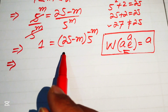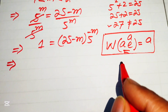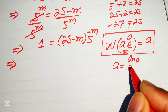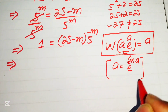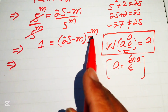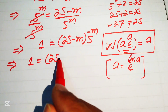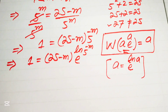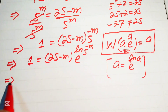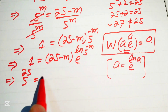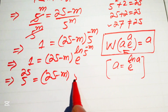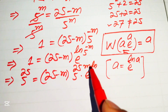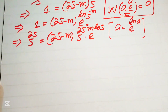We rewrite 5 to the power of minus m using the identity a = e^(log a), so 5^(−m) becomes e^(log 5 · (−m)). This gives us 1 equals (25 minus m) times e to the power of (−m · log 5). Then we multiply both sides by 5^25.